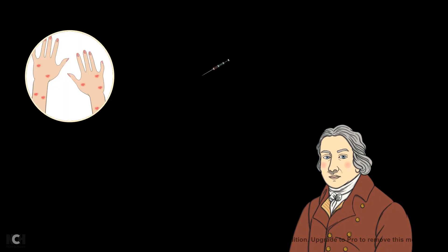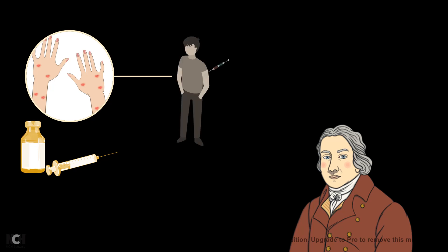Edward Jenner thought, if you can take out the extract from the pustules of these milkmaids who have developed cowpox and inject that into a person, that person might get immune. And he has seen that the milkmaids are mostly not infected by the smallpox. And that's what he did with his gardener's son.